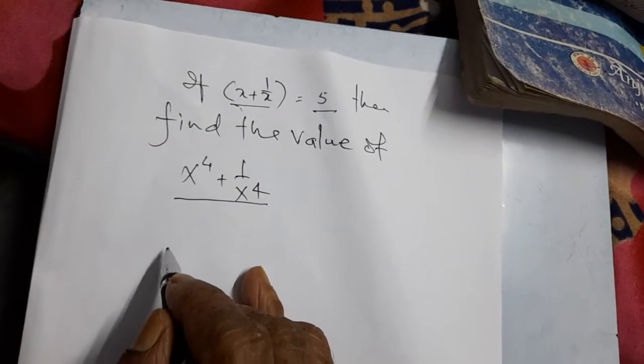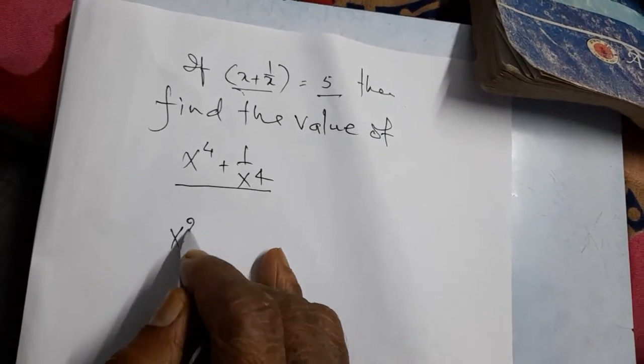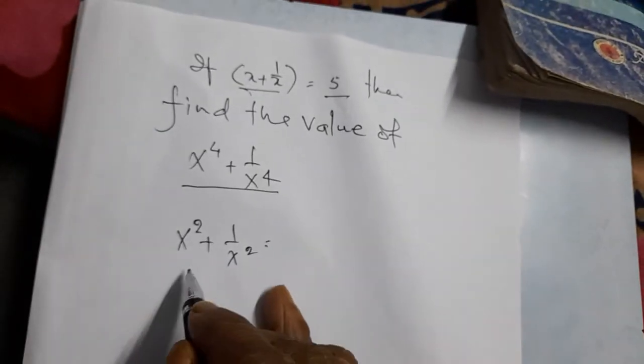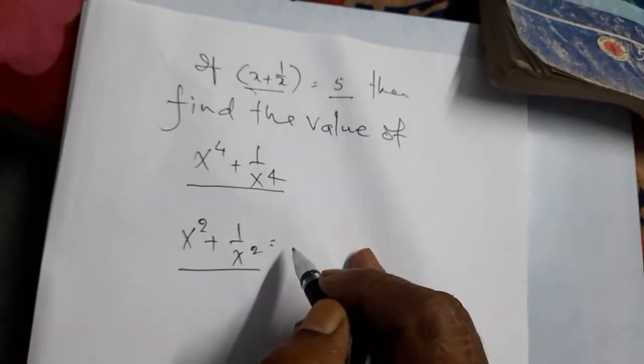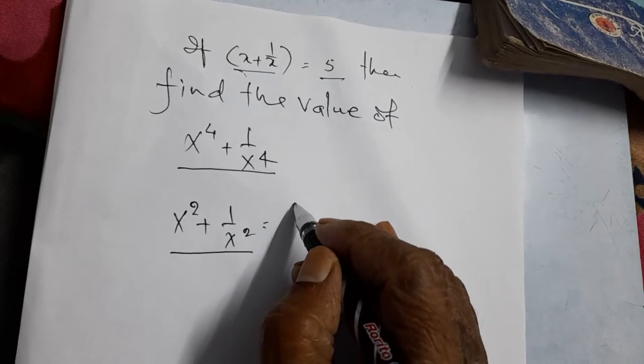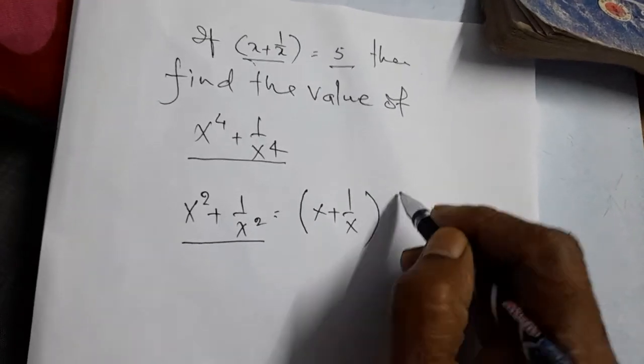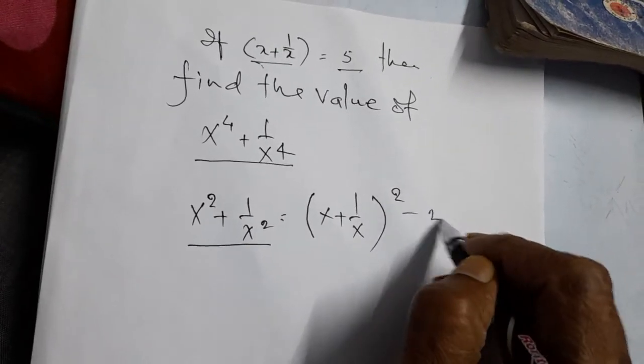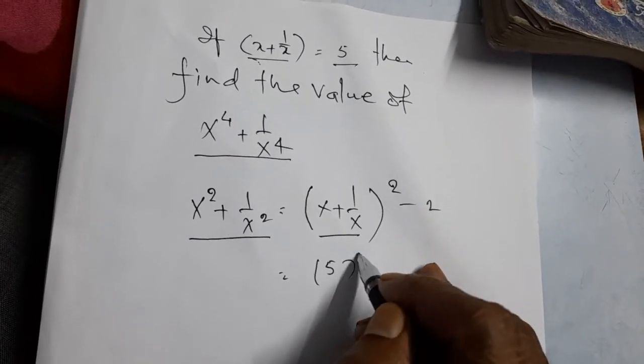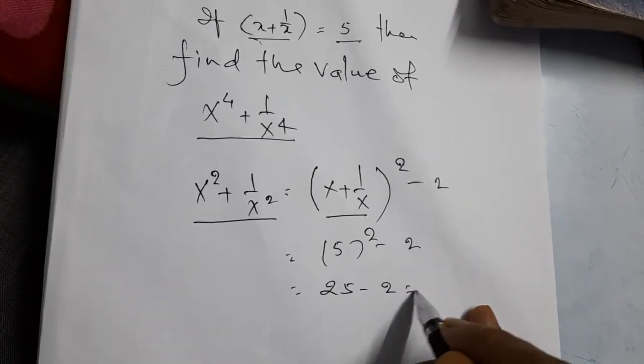So first of all, you will have to find the value of x square plus 1 by x square. To find the value of x square plus 1 by x square, it will be found by the formula: x plus 1 by x whole square minus 2. So the value of x plus 1 by x is equal to 5. It is 5 whole square minus 2, and that is 25 minus 2, and that is 23.